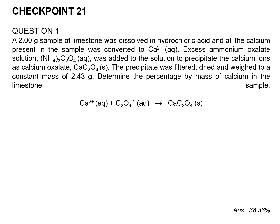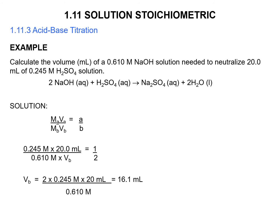Here is another checkpoint you can try. Next, acid-base titration can be applied in stoichiometry. Calculate the volume of 0.61 molar sodium hydroxide solution needed to neutralize 20 ml of 0.245 molar sulfuric acid solution. The balanced equation is: 2 mol NaOH with 1 mol H₂SO₄ produces sodium sulfate and 2 mol water. Using the formula M_A·V_A / M_B = V_B, substituting the values gives a volume of 16.1 ml of sodium hydroxide required.